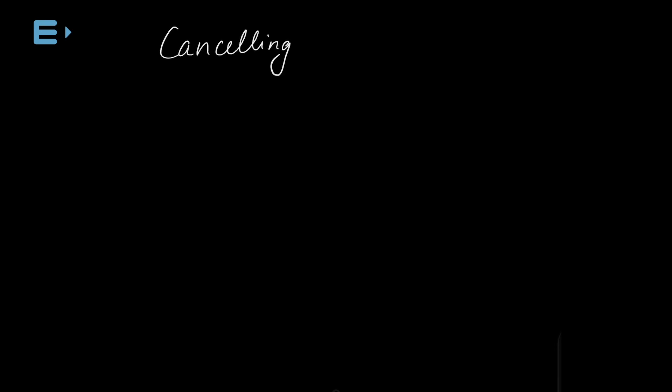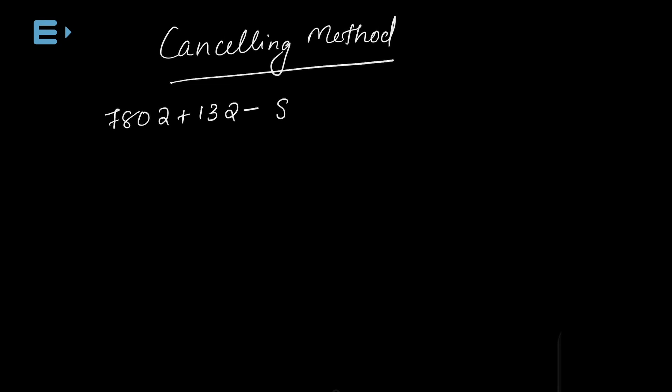Now let's look at the cancelling method. The question is: 7802 plus 132 minus 8963 plus 1326 equals question mark multiplied by 33. What will come in the place of the question mark? If we solve this the traditional way — subtracting and dividing — it is a long procedure. How do we simplify the left-hand side?